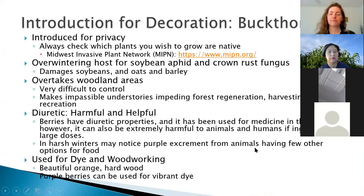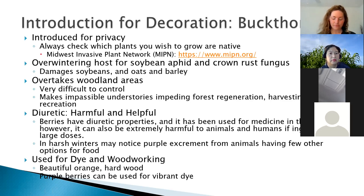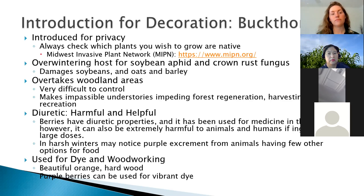Now we're going to talk about specific introductions based on those pathways. The first one introduced for decoration is buckthorn — common or European buckthorn, and maybe even glossy buckthorn. These are all around Minnesota and very widely distributed at this point. Buckthorn was introduced in the late 1800s for privacy. People liked how gnarly it grew and it gave them a natural fence from their neighbors, but now it's all over Minnesota.